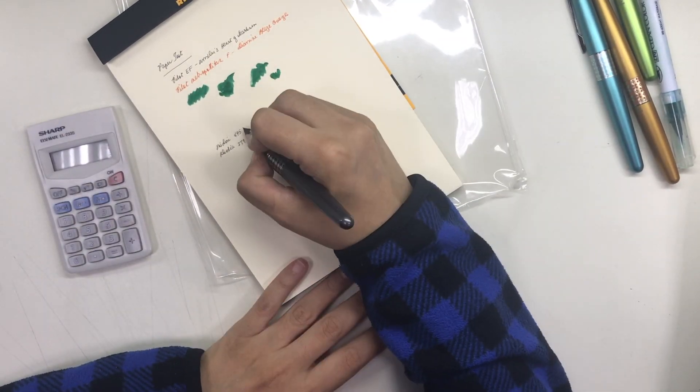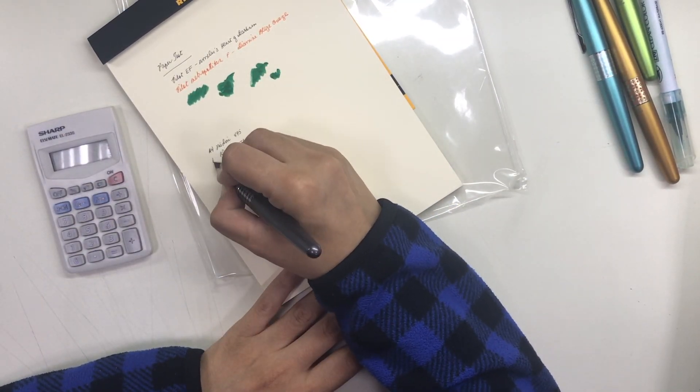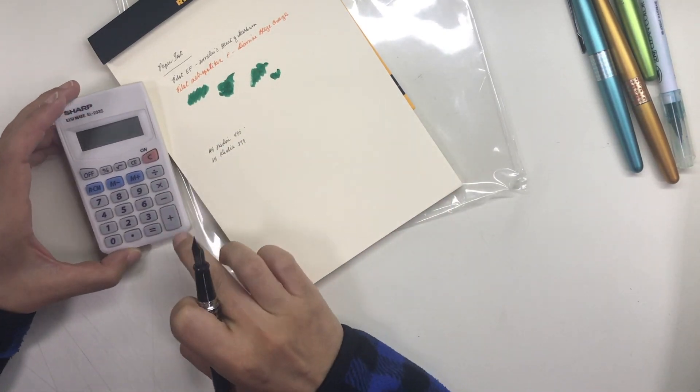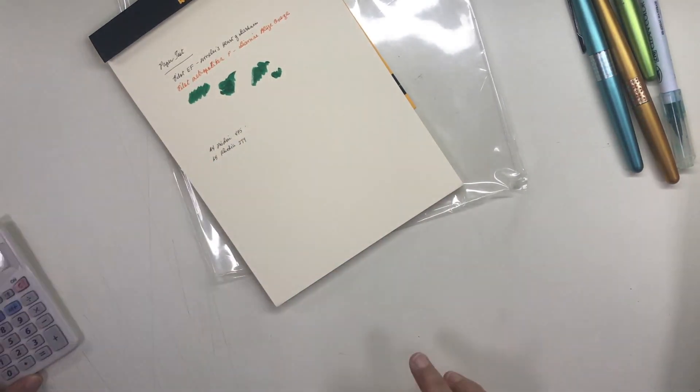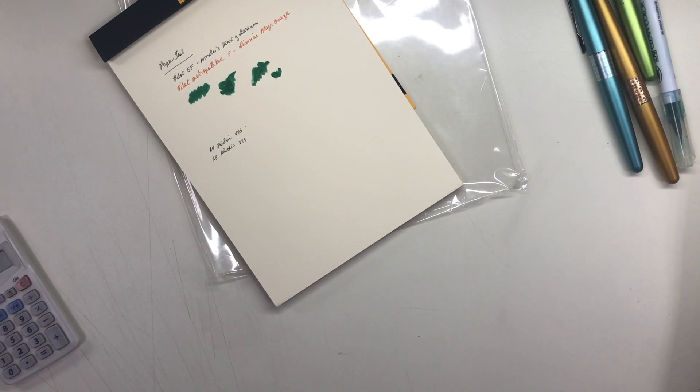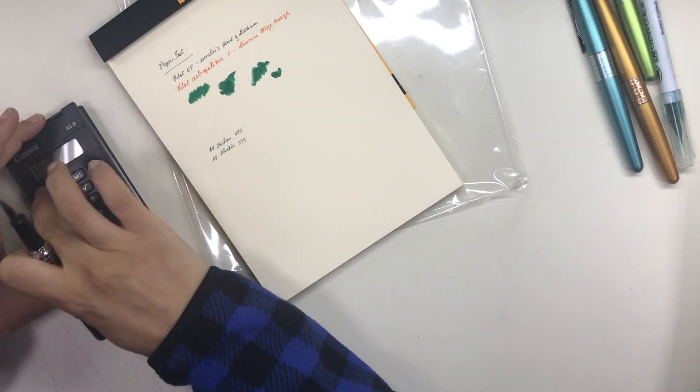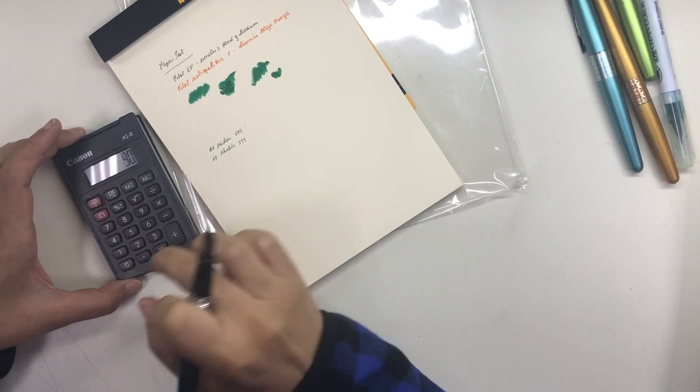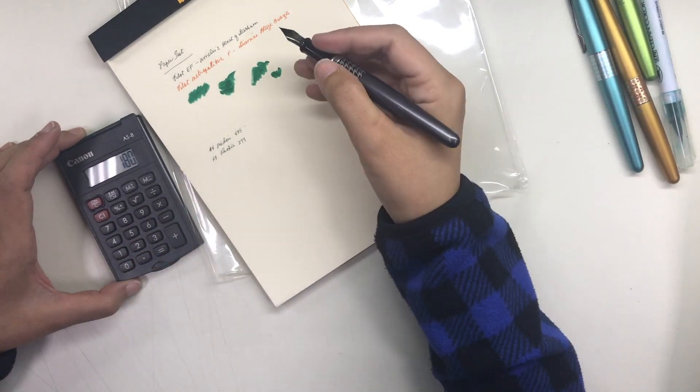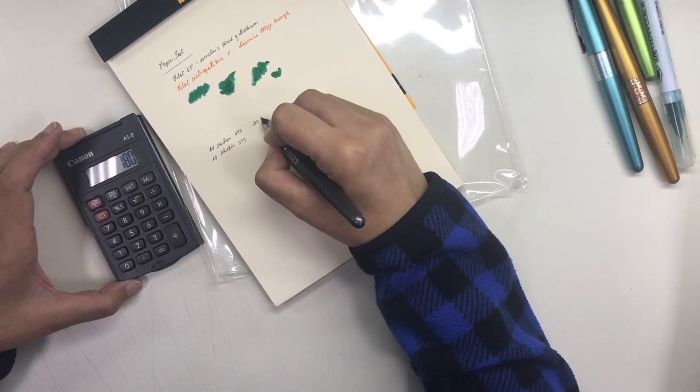The Midori MD paper pad in A4 size cost 495 pesos and has 90 A4 sheets which can make 180 A5 sheets which comes down to 2 pesos and 75 centavos per A5 sized sheet.